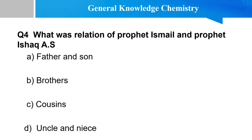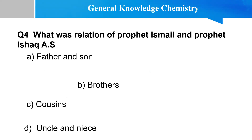Next MCQ is Islamiyat. What was the relation of Prophet Ismail and Prophet Ishaq? Options: Father and Son, Cousins, Uncle and Nephew. The right option is Brothers — Prophet Ismail and Prophet Ishaq were brothers.